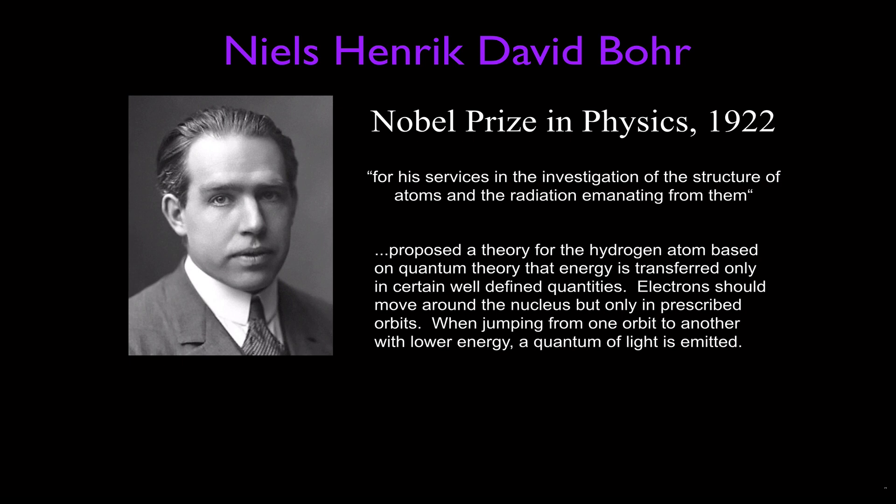Electrons should move around the nucleus, but only in prescribed orbits, not all over the place. And when they jump from one orbit to another orbit with a lower energy level, they can emit a quantum of light, which we call a photon of light.